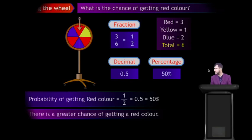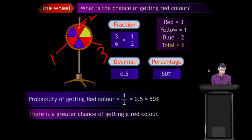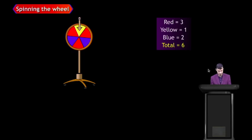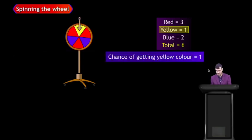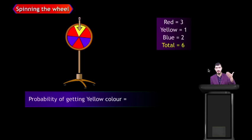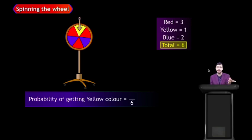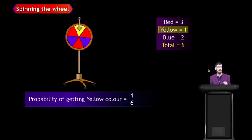There is a greater chance of getting a red color because the red color has 3 portions out of 6. For yellow color — total outcome is 6, yellow portions is 1 — so the probability of getting yellow is 1 by 6, which is 16.6 percent. There is a less chance that the yellow result is going to happen.